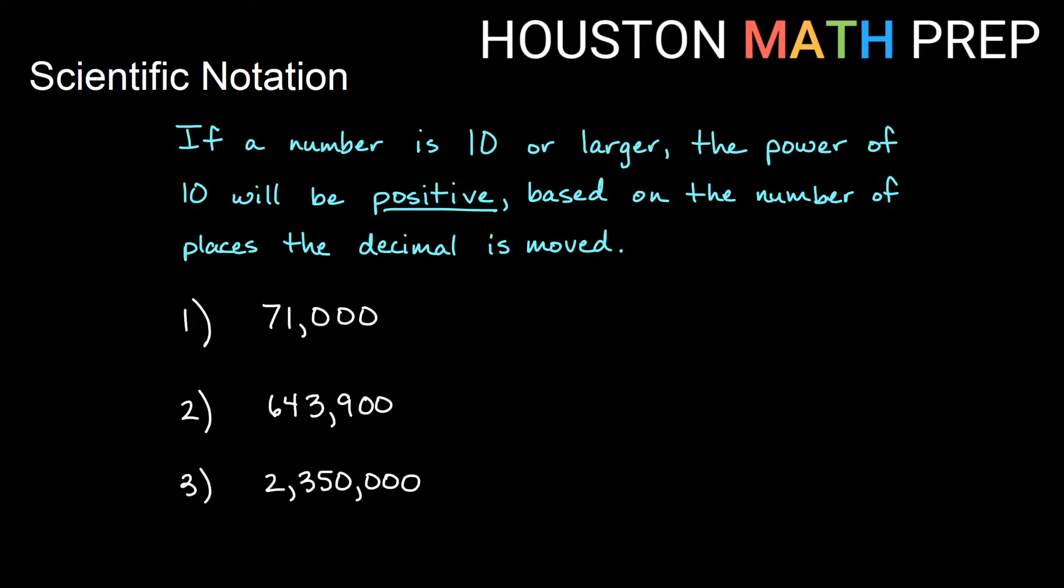Let's look at our first rule for the big numbers. If a number is 10 or larger, then your power of 10 is going to be positive, based on the number of places that the decimal is moved.